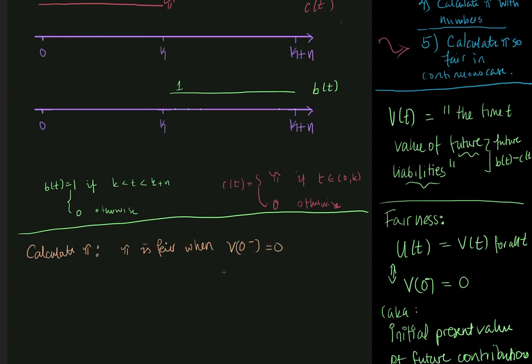So when the present value at time 0 of all future liabilities just evens out to 0, it doesn't really make a difference if you stand right before 0. So since all payments are continuous, v of 0 minus is equal to v of 0. So it's enough if we can just show that so find pi such that v of 0 is equal to 0.